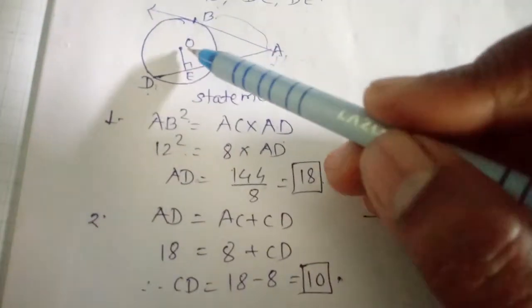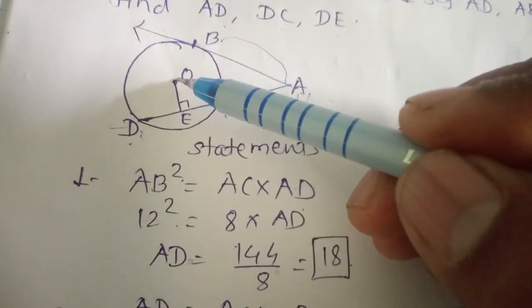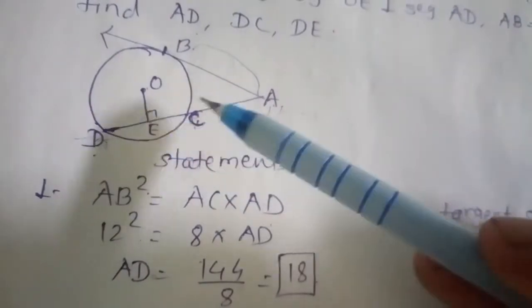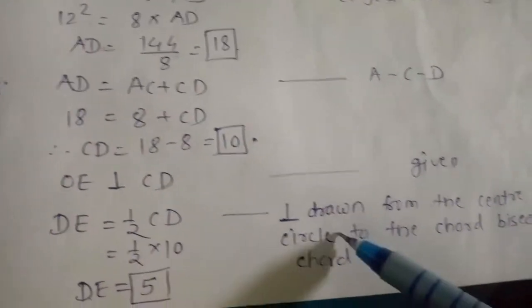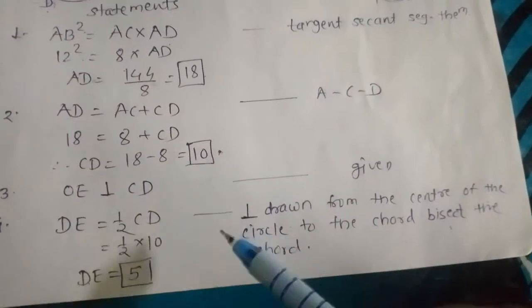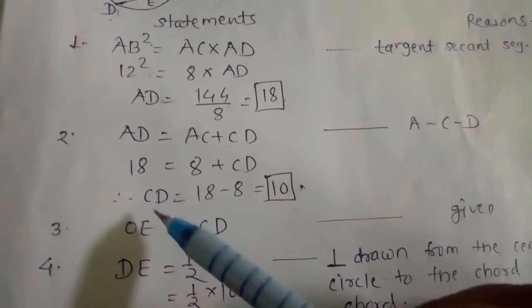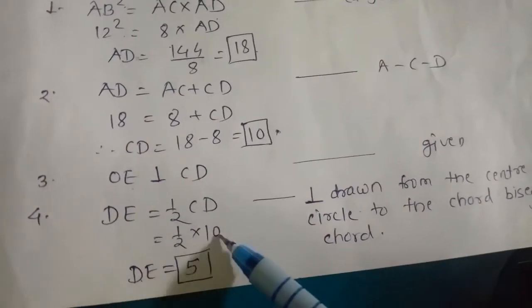Since OE is perpendicular to chord CD, by the theorem that a perpendicular drawn from the center to a chord bisects the chord, DE = EC. So DE = ½ × DC = ½ × 10 = 5.